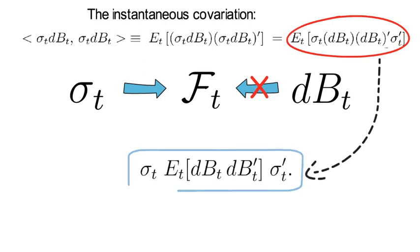So we have that the instantaneous covariance equals sigma_t times the conditional expectation as of time t of dB_t times dB_t transpose times sigma_t transpose.